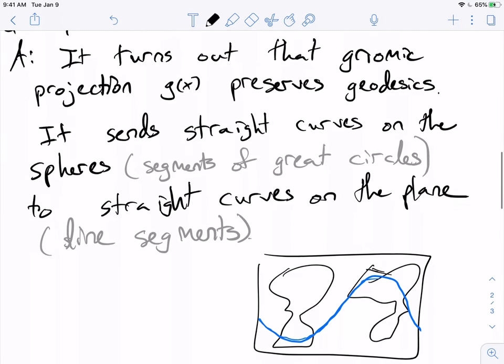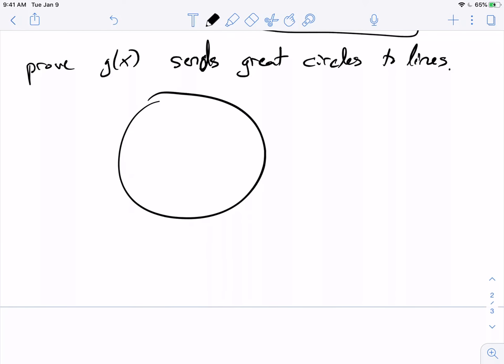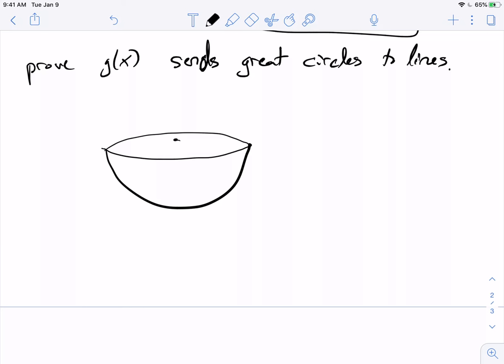Okay, so gnomonic projection is useful if you believe me that it sends great circles to lines. Okay, and so one of your homework problems this week is to prove that claim. So let me draw a better picture. So I have a hemisphere here, and that's the domain of the map. We can only look at a single hemisphere at a time, and it's mapping onto the plane. I didn't say it, but I should have said it. Where is this plane located? It's exactly touching the south pole here.